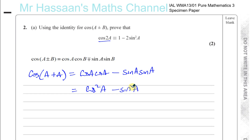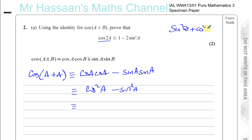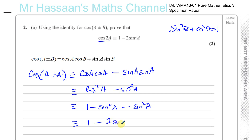So we have cosine squared A minus sine squared A. Now we have to express it as 1 minus 2 sine squared A. We need to convert the cosine squared into sine squared. We know the identity that sine squared of an angle plus cosine squared of an angle equals 1, so we can replace cosine squared A with 1 minus sine squared A. This gives us 1 minus sine squared A minus another sine squared A, which gives us 1 minus 2 sine squared A.